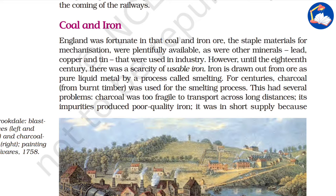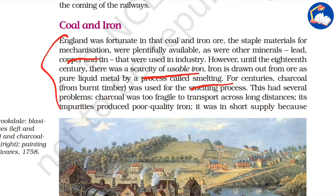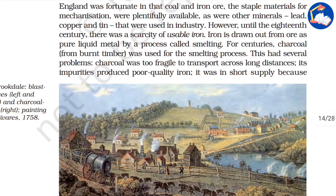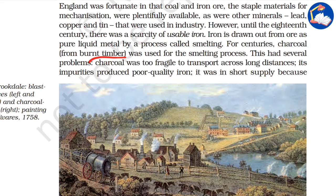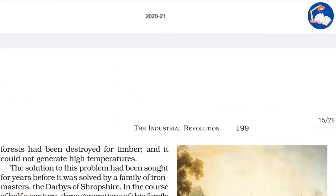First, coal and iron: England was fortunate in that coal and iron ore — the staple materials for mechanization — were plentifully available, as were other minerals like lead, copper, and tin. Until the 18th century there was a scarcity of usable iron. Iron was drawn out of ore, but the smelting process was not properly done — it was not heated sufficiently because burnt timber and charcoal were used, resulting in poor quality iron.